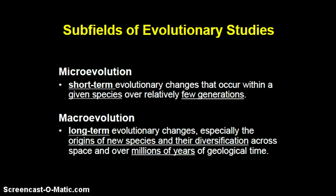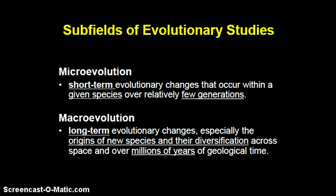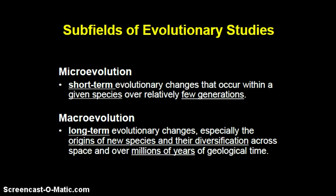From here, I'm going to go into a discussion of the different subfields of evolutionary studies. As I mentioned previously, there's both macroevolution and microevolution. Microevolution — we think of micro as small — refers to short-term evolutionary changes that occur within a given species over relatively few generations. Versus macroevolution, which covers long-term evolutionary changes, especially looking at the origin of new species and their diversification across space and time, indeed over millions of years of geologic time.